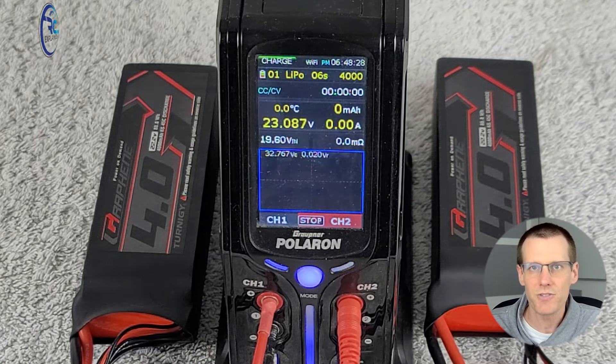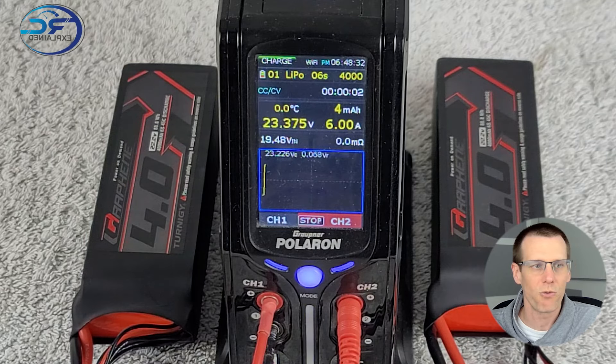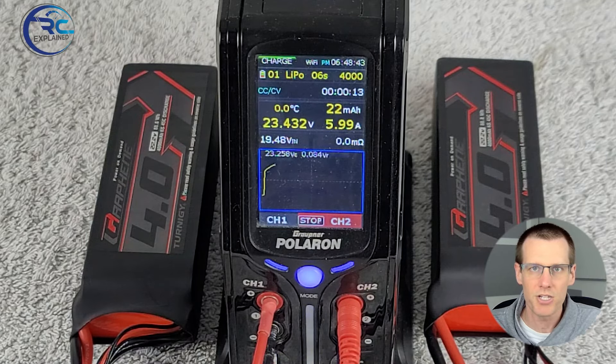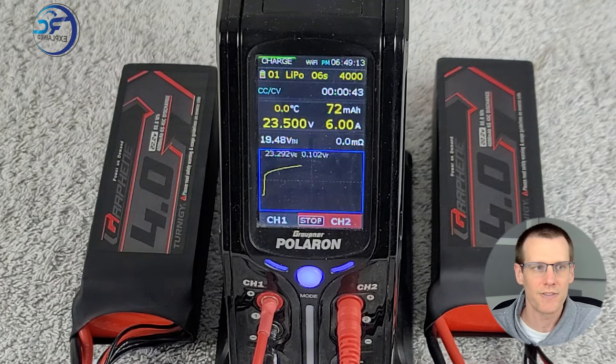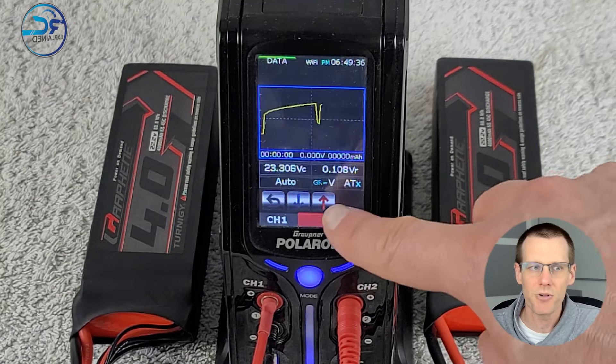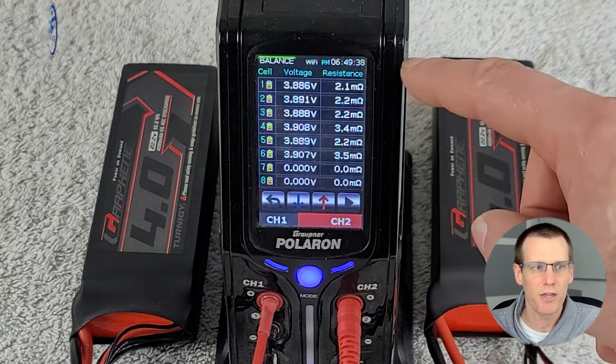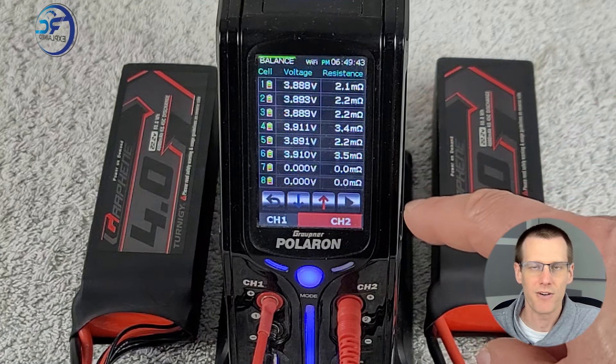So there we saw values of anywhere from 2.3, 2.4, all the way to 3.4 milliohms, quite the variation on that very first pack. Now we're doing the exact same thing here on the second pack. We're accelerating the video to the one minute mark, and we got our readings. They already look a little bit better. Anything from 2.1 to 3.5 milliohms for this battery.